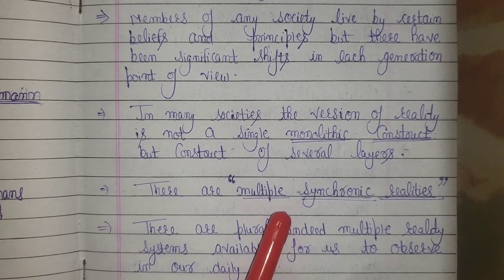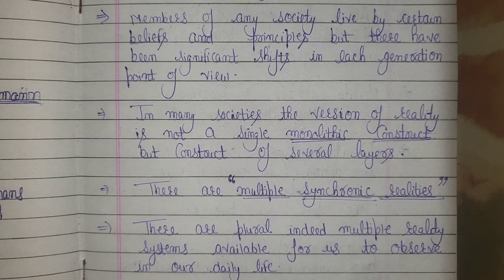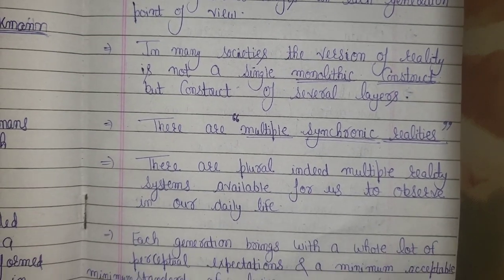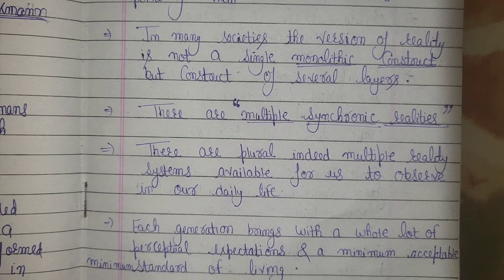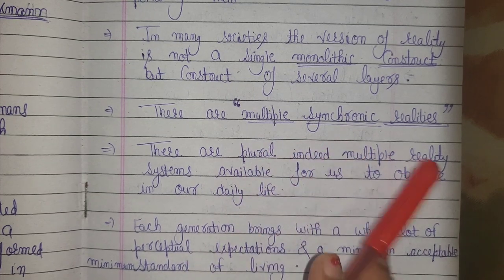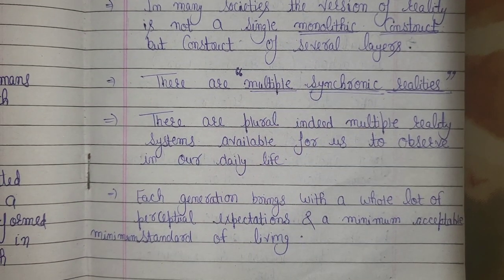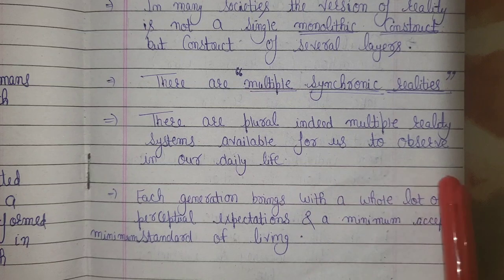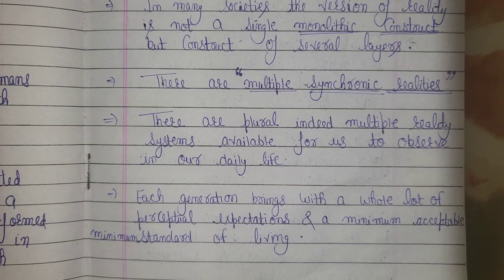In many societies, the version of reality is not a single monolithic construct — it is not only one thing. It is a construct of several layers. There are multiple synchronic realities — plural, indeed multiple reality systems available for us to observe in our daily life. It totally depends upon our observation and perspective.